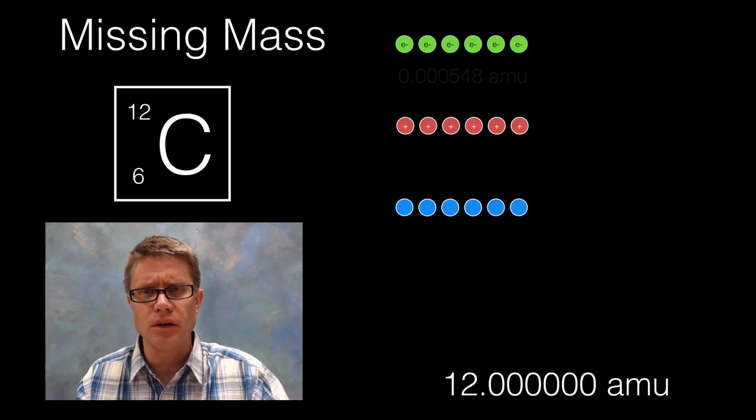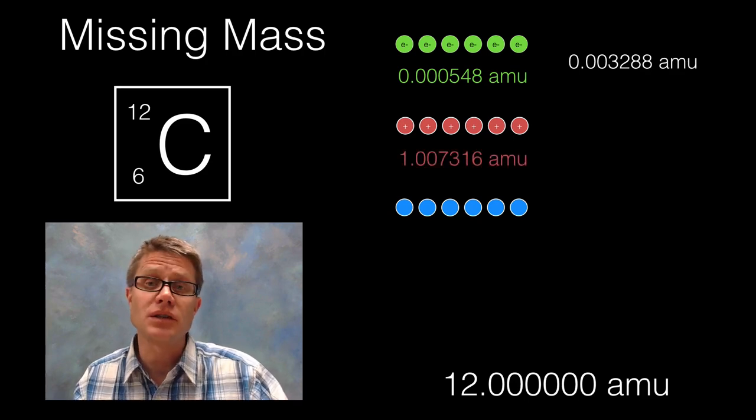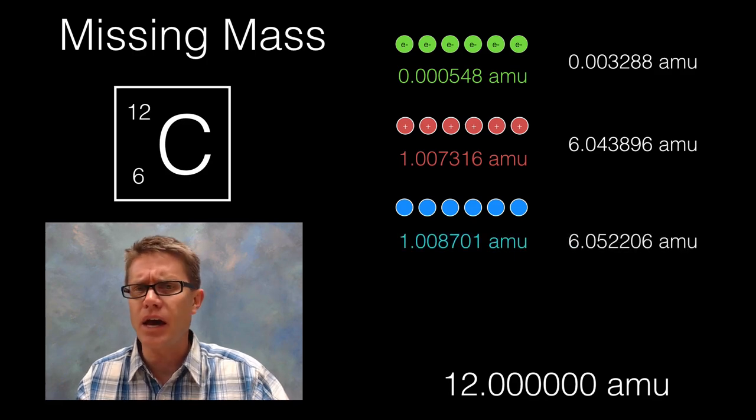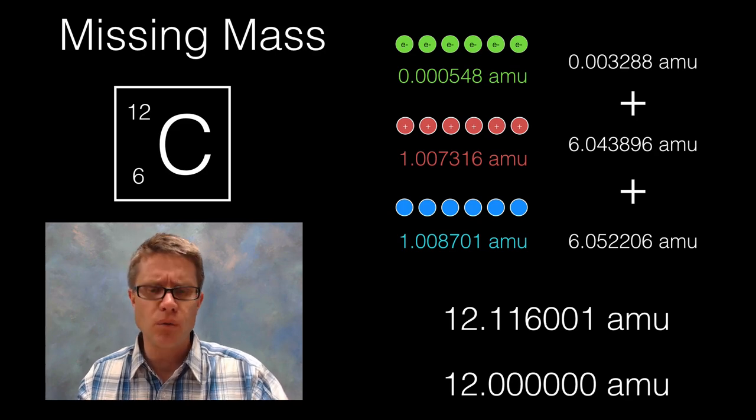Let's break apart those electrons. They have a mass of 0.00548 atomic mass units. If I multiply that times the 6 electrons, this is the total mass of electrons. I could do the same thing for the protons and the neutrons that I have. And then if I add all of these up I get a number that is larger than the number I had before.